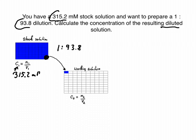That basically means we take this one part from our stock solution and put it in a total volume of 93.8. So we could actually say we have volume of 1, that's one part here from the stock solution, and volume 2 would be 93.8 parts for the working solution.